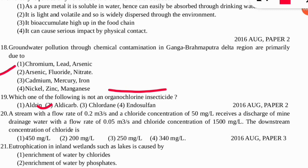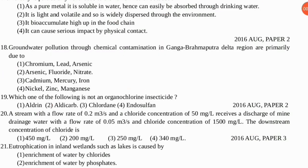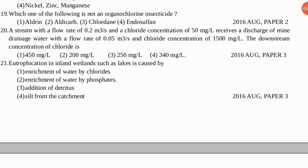The next question (mass balance numerical) can be solved with the help of a video already made — the link is in the description below. The next question: eutrophication in inland wetlands such as lakes is caused by which reasons? The correct option is number two — eutrophication happens due to the enrichment of water by phosphates.